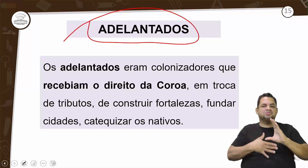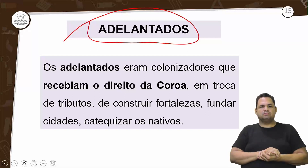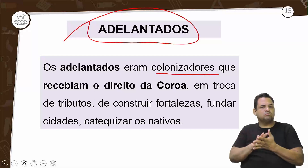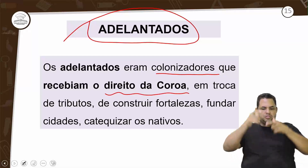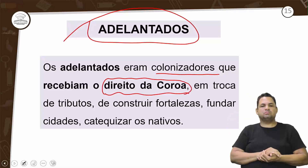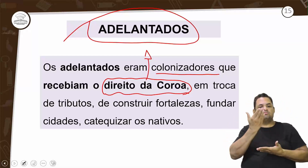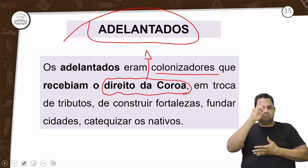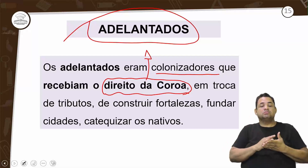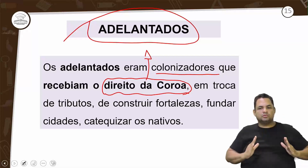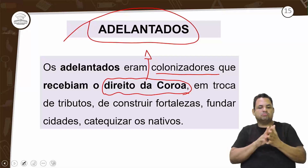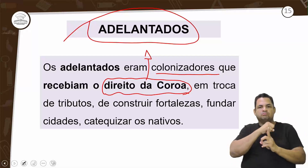Os adelantados eram colonizadores que recebiam o direito da coroa. Em troca, deveriam pagar tributos, construir fortalezas, fundar cidades e catequizar os nativos. A Igreja estava junto com o processo de colonização. Construir fortalezas era uma forma de se proteger dos ataques e mostrar a força da pólvora.